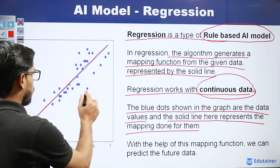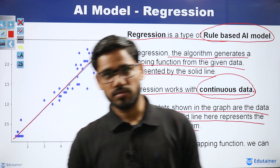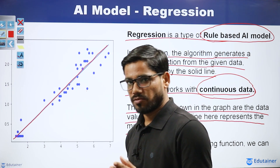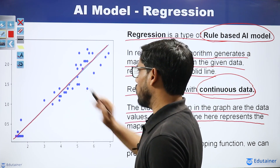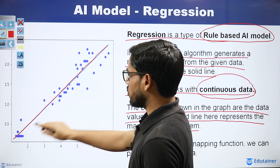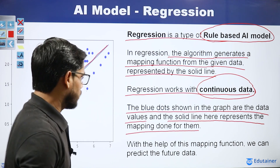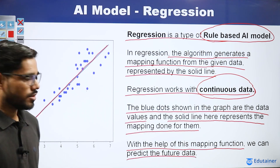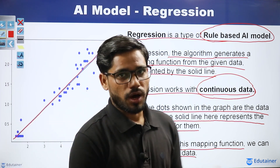What do you see in the image? The blue dots are the data values — these are your data sets acquired through data acquisition. The solid line is the mapping function generated by the regression model. With the help of this mapping function, we can predict future data. This mapping function is based on future data output prediction.